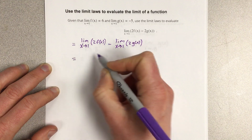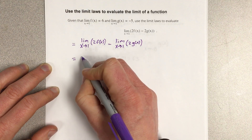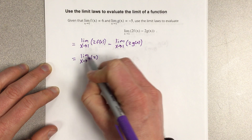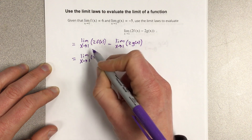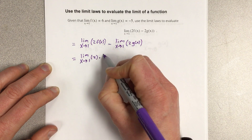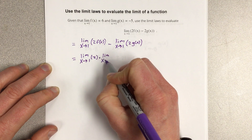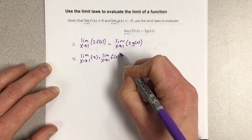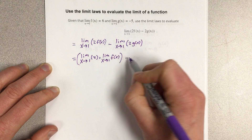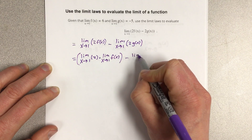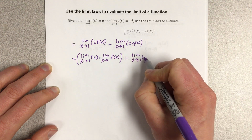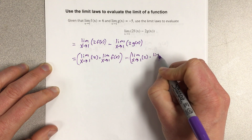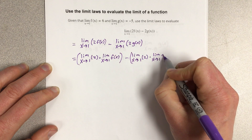Then we're going to use the product law and say that the limit as x approaches 1 of 2 times the limit as x approaches 1 of f(x), minus the limit as x approaches 1 of 2 times the limit as x approaches 1 of g(x).